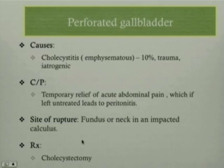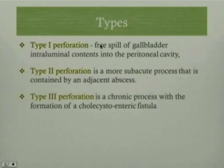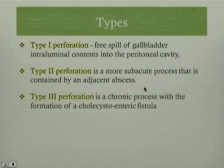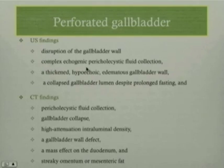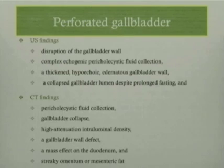Cholecystectomy is almost always performed to salvage. There are three types of gallbladder perforation. Type 1 refers to free spillage of gallbladder intraluminal contents into the peritoneal cavity. Type 2 is a more subacute process contained by an adjacent abscess. Type 3 is a chronic process with the formation of a cholecystoenteric fistula. The most specific ultrasound finding is disruption of the gallbladder wall, along with a complex echogenic pericholecystic fluid collection in the presence of an inflamed gallbladder. CT findings include a break in gallbladder wall continuity, pericholecystic fluid collection, gallbladder collapse, and high-attenuation intraluminal density secondary to hemorrhage.